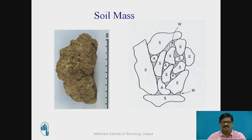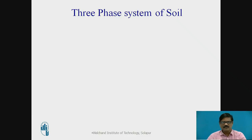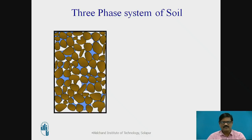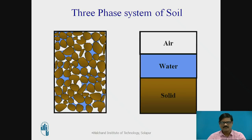In this soil mass we can see all the soil solid, air, and water components — water represented by blue color and air represented by white color. Diagrammatically, we can represent the three-phase system. These components are collectively shown on the right-hand side as the three-phase system of soil, where we have soil solid, water, and air. In this way, the soil mass can be represented by the three-phase system of soil.